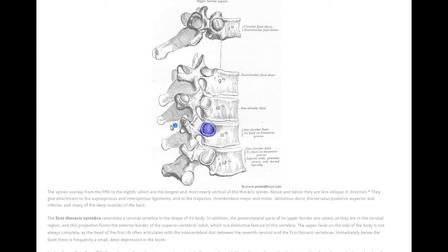Here you can see the articular surface for the head of the rib on T11 is completely circular in shape. Again it is positioned slightly posterior. Just like T10 it will occupy some of the pedicle's area here. Transverse process is much smaller as we can see and it won't have articular surface for the tubercle of the rib.